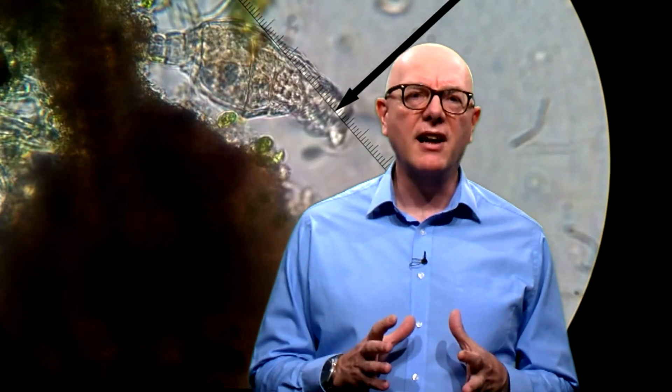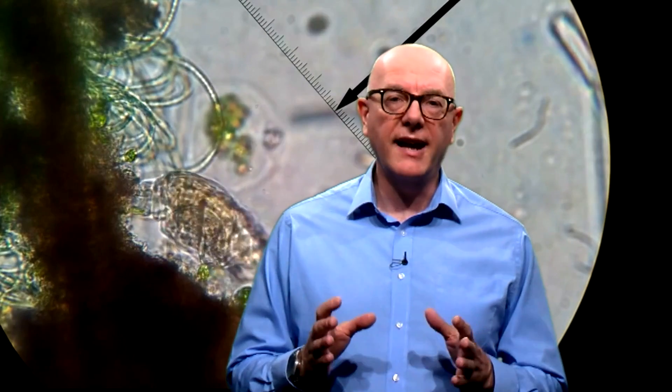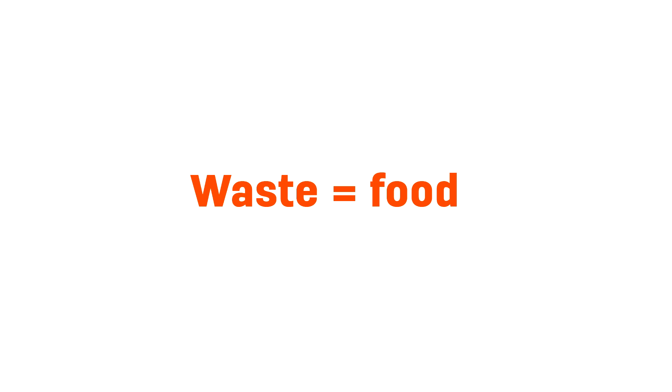If we redesigned products so that they could be reused or disassembled at the end of life, we could keep those products and their materials at their highest value at all times. At its core, the circular economy is about waste equals food. This is the first principle.